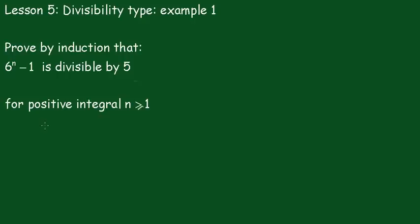Lesson 5: Divisibility type, Example 1. Prove by induction that 6 to the n minus 1 is divisible by 5 for positive integral n greater than or equal to 1.